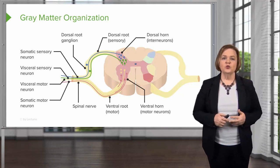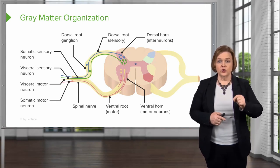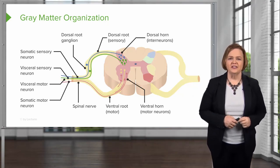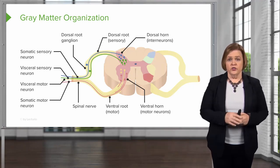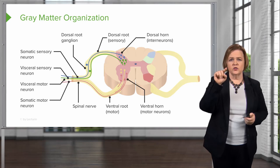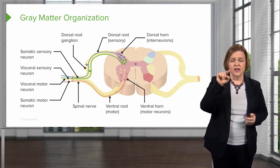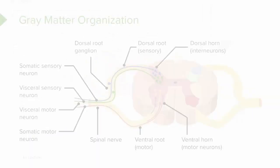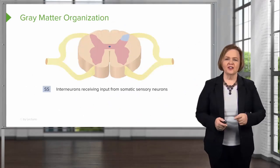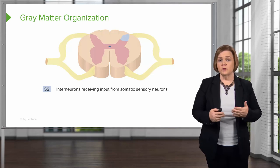Now look at this — this is the gray matter organization. Do you remember what makes gray matter, gray matter? Is it mostly the axons or the cell bodies? Cell bodies, right. Now we've labeled it, so let's hang out on this slide for a while. You have the dorsal horn — that's an interneuron. Look at the dorsal root — that's the sensory dorsal root ganglion. Follow that all the way around and take a look at those words. Pause the video, start from the dorsal horn side of the slide, and work your way around counterclockwise, familiarizing yourself with each one of those words.